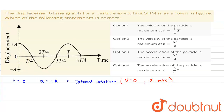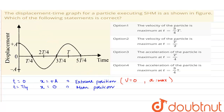When the time period is T/4, the displacement of the particle is 0, so it is in its mean position. At the mean position, the velocity is maximum and acceleration is 0.